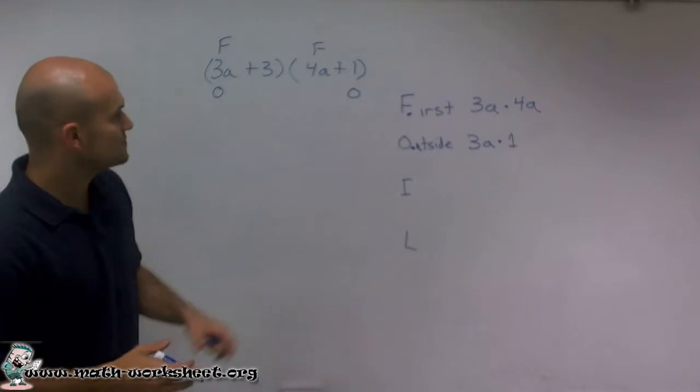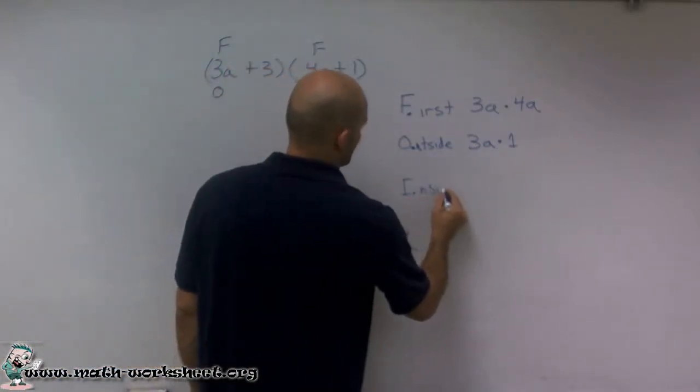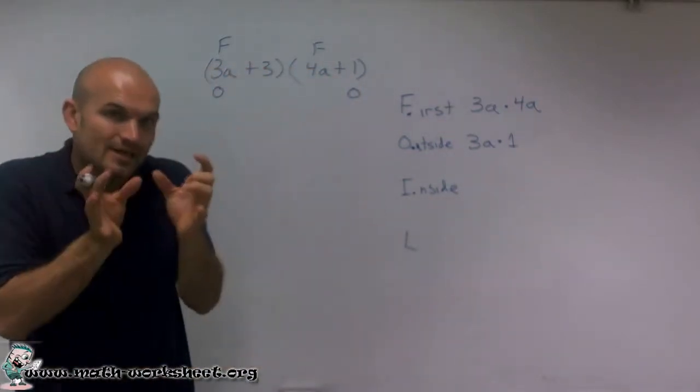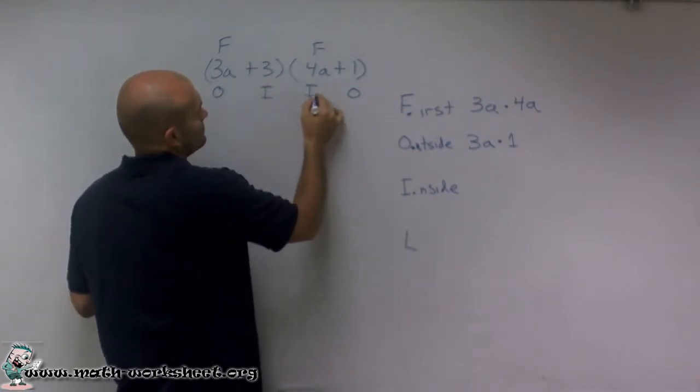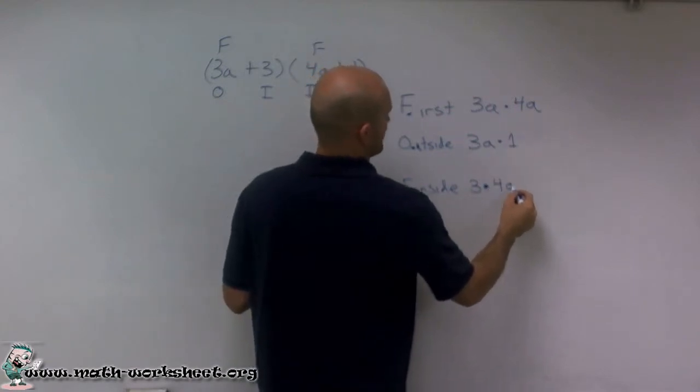Now the next one is going to be the inner, or I'm just going to call it the inside. So if the two are the outer, then the two inner, or the inside, are going to be 3 and 4a. So I'm going to multiply those two, 3 times 4a.